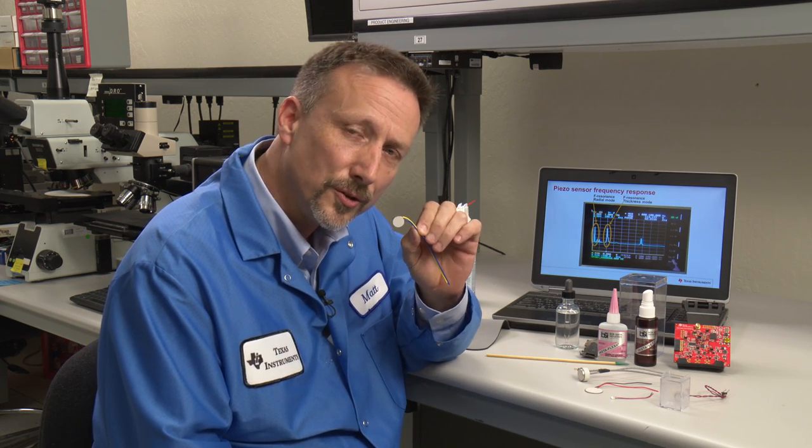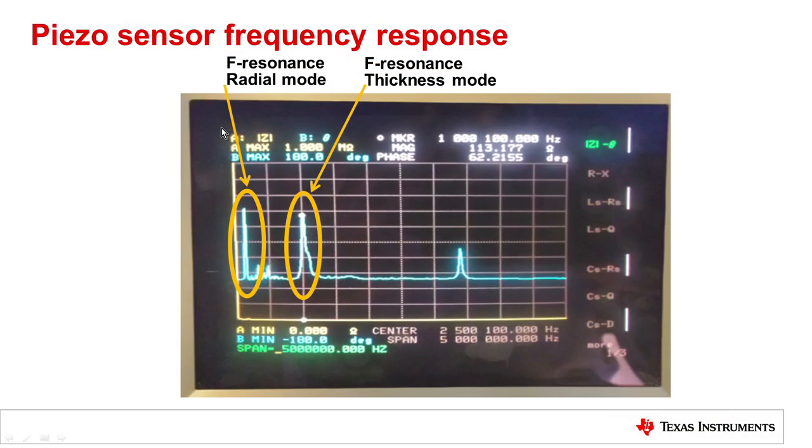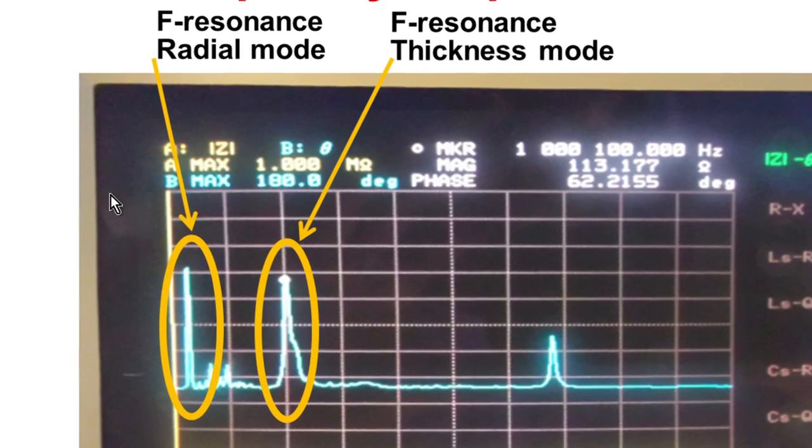For every transducer, there's two different types of resonances. In this slide here, for the frequency response of the transducer I just picked up, it actually has two key resonances. Every transducer that's shaped like a disc has two modes of resonance. A radial mode and an axial mode.